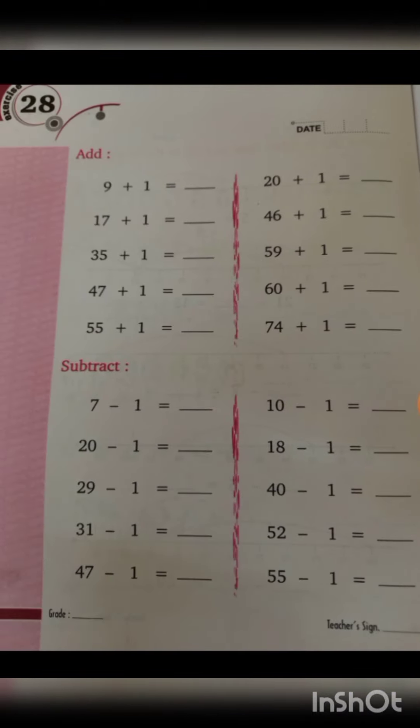Add. So you see, only you have to add 1 in all these digits. Add 1 means what? Just 1 step on counting. 9 plus 1 means 10. 17 plus 1 means 18. So very, very, very easy. You have to add 1.